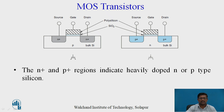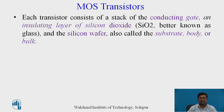Between the gate terminal and the drain and source, there is an insulating material made of silicon oxide. Polysilicon is used for the gate terminal, providing isolation between the gate polysilicon and the substrate — the P-region or N-region. The N-plus and P-plus regions indicate heavily doped N-type or P-type silicon. Each transistor consists of a stack of a conducting gate (G terminal), an insulating layer of silicon dioxide (SiO2), and the silicon wafer known as the substrate, body, or bulk.